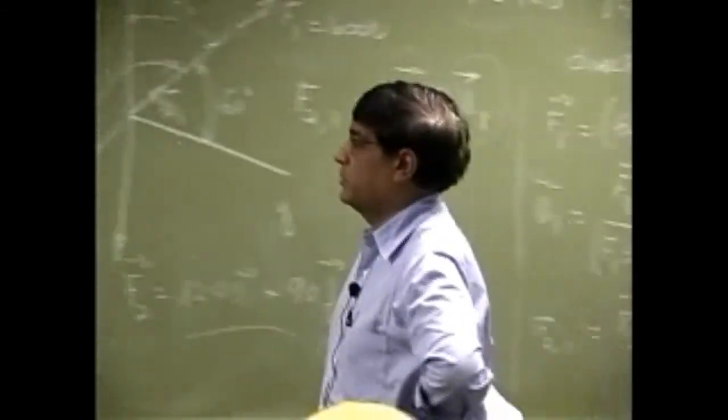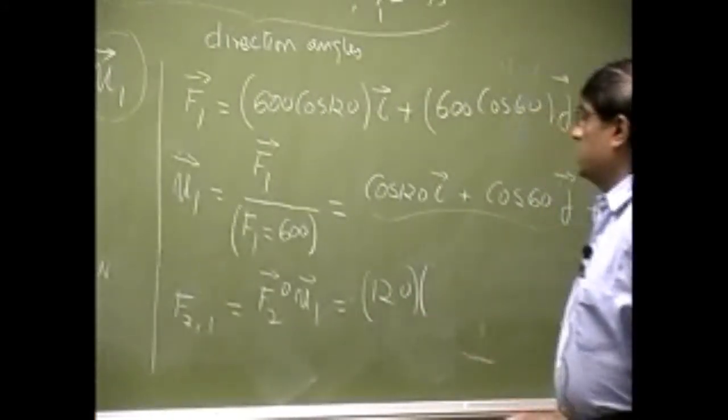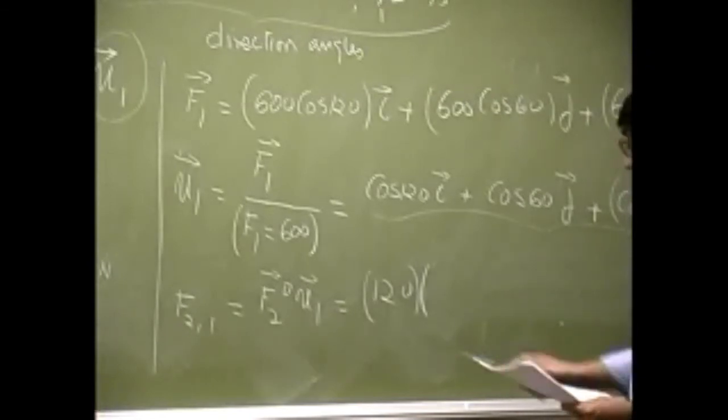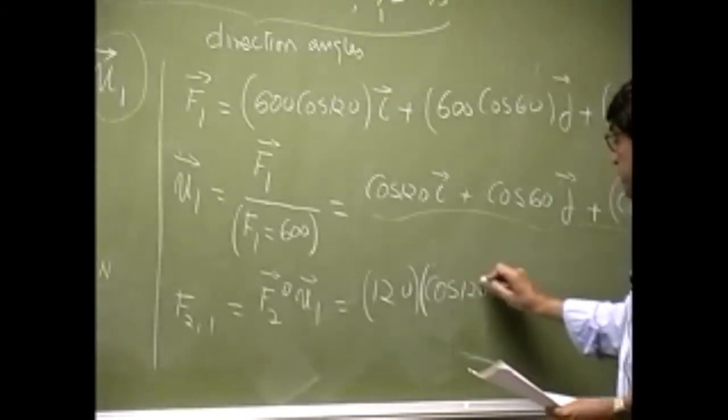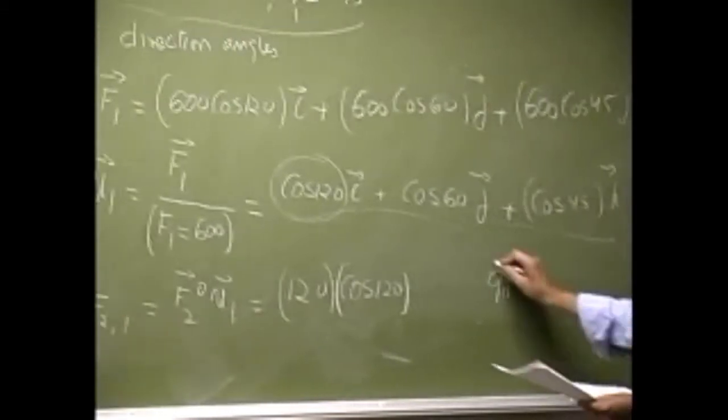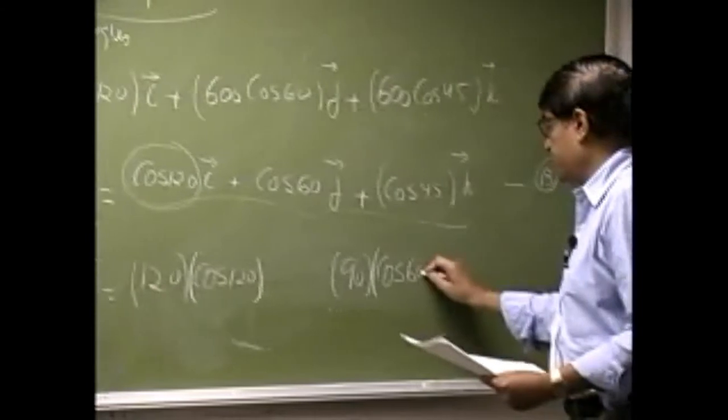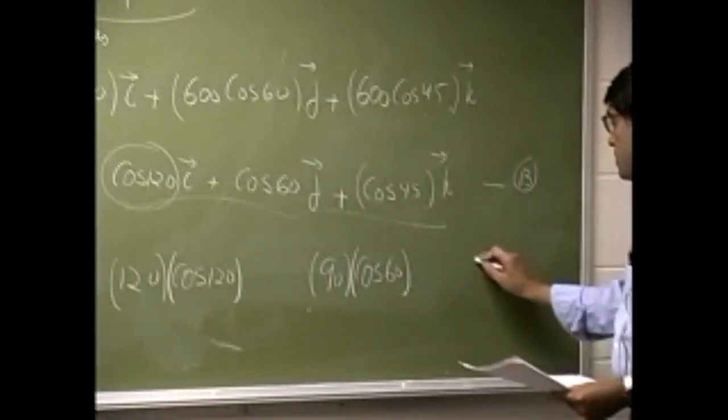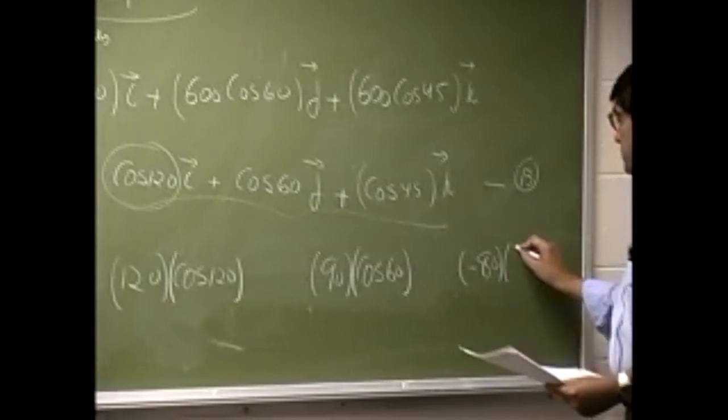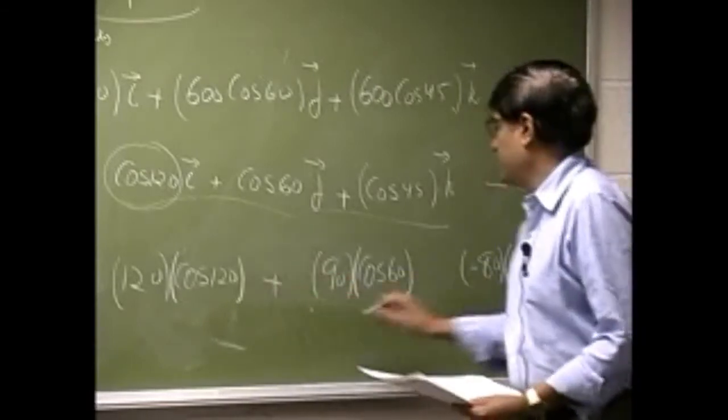And we have the equation right here, the one we will use. So you take the x component here, that's 120. Then you take the next one which is cosine 120. Then you take the next component which is 90, you multiply that by cosine 60. Then you take the third component which is negative 80, you multiply this by cosine 45. Then you add all of this.